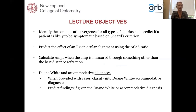Today's lecture objectives are to identify the compensating vergences for all types of phorias and predict if a patient is likely to be symptomatic based on Sheard's criterion. We'll also predict the effect of a prescription on ocular alignment using the ACA ratio, calculate the AMPs when measured through something other than the best distance refraction, and go through Duane White and accommodative diagnoses.